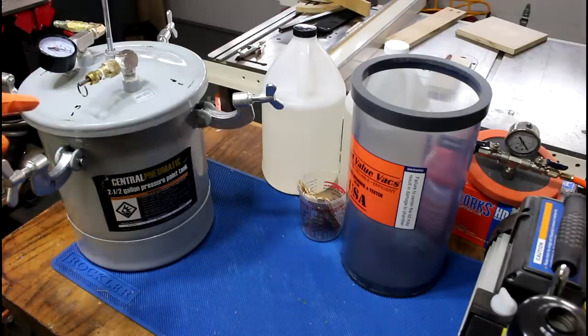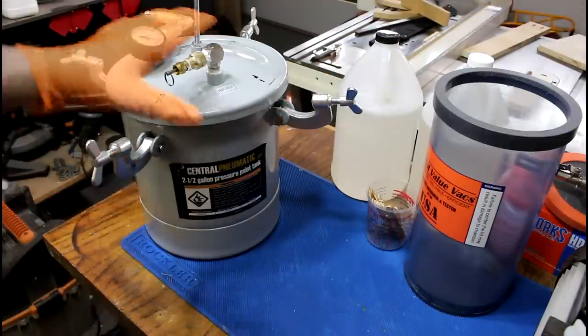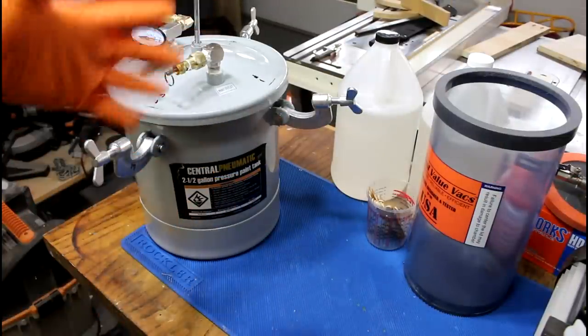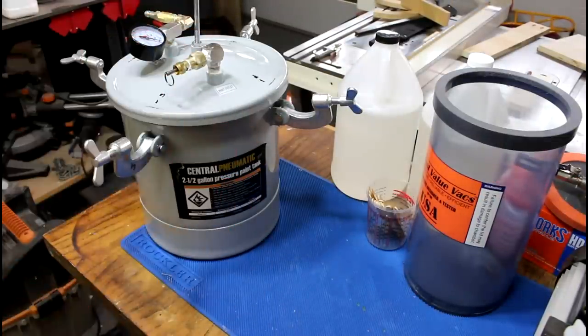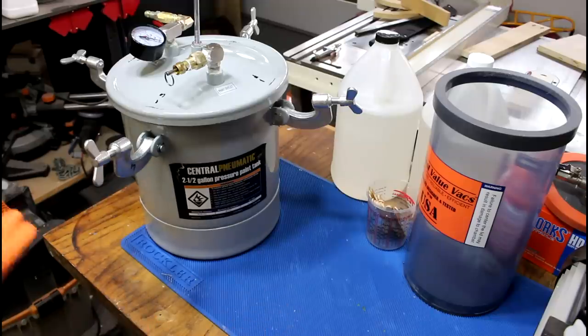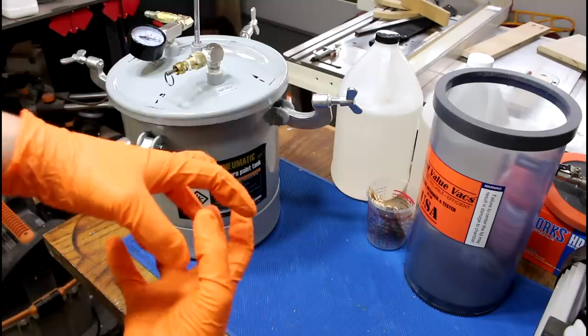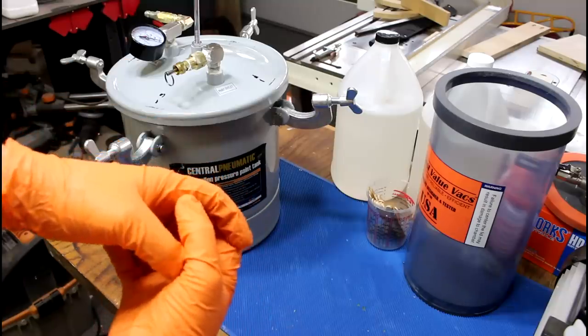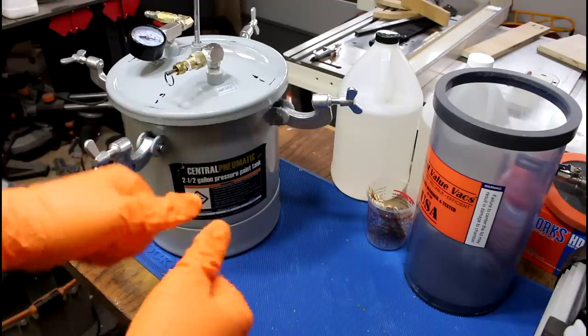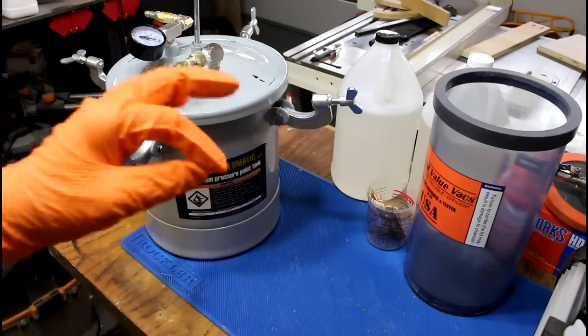But first, let me show you what this is. You pour a gallon of paint in here, you pressurize the tank and then you walk to wherever you want to go and you spray on the walls. We're not using it for that. What we're using it for is to put volumes of pressure down on resin so that the bubbles that are in resin won't be removed but will be shrunk down so small they won't be visible.